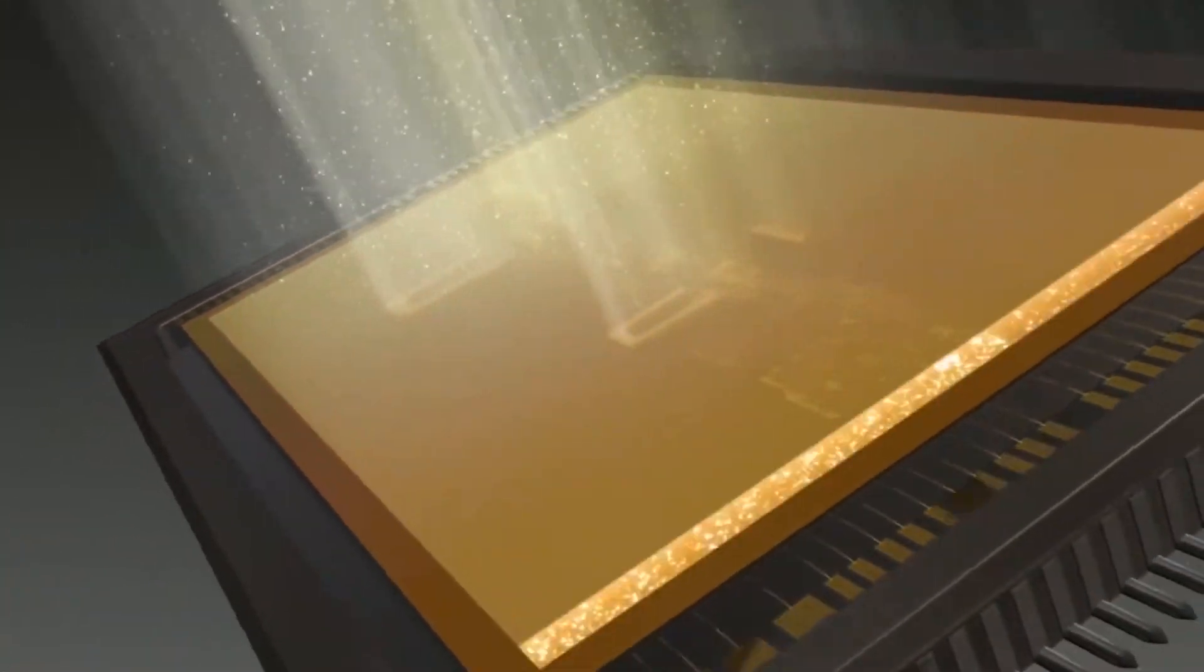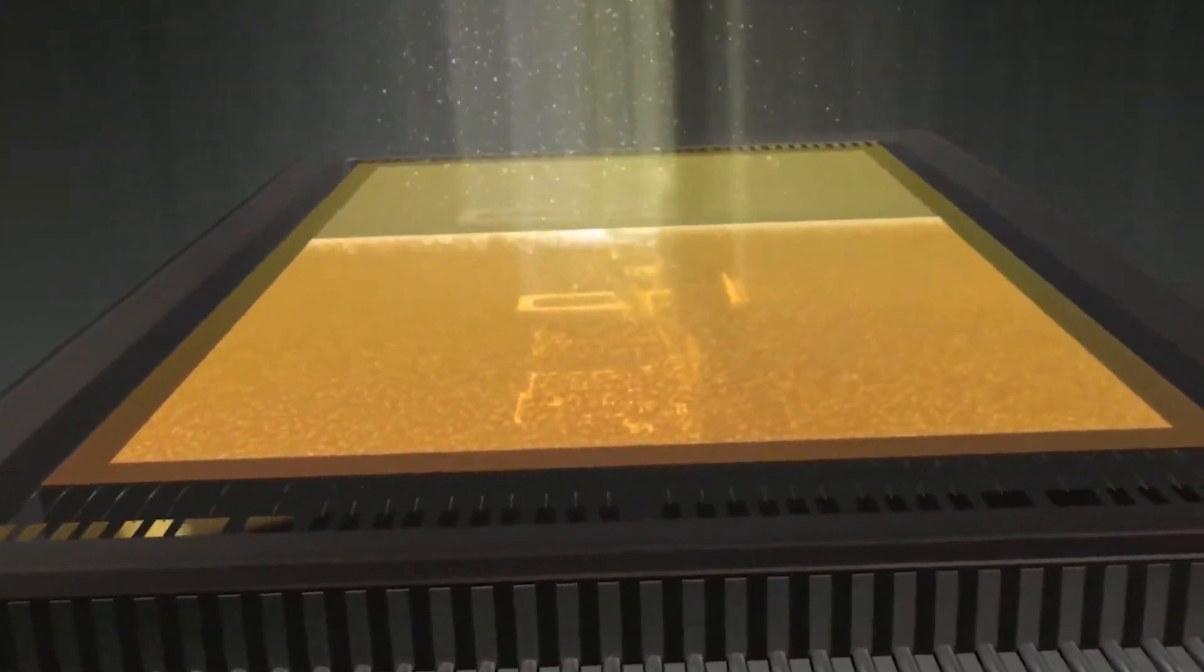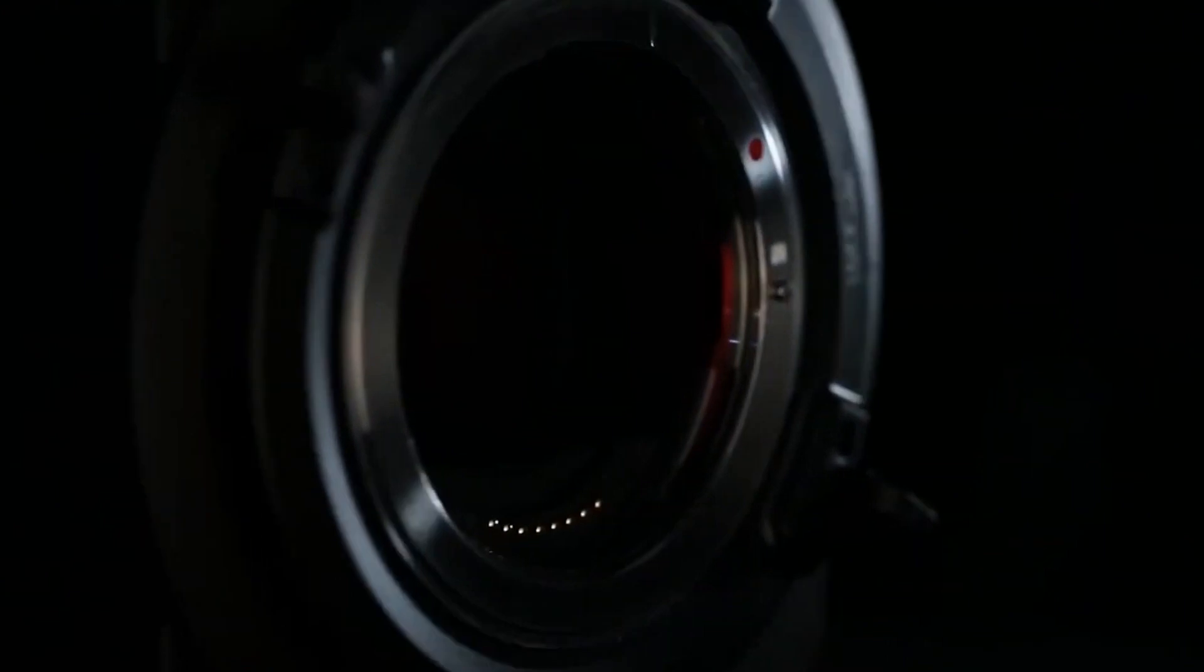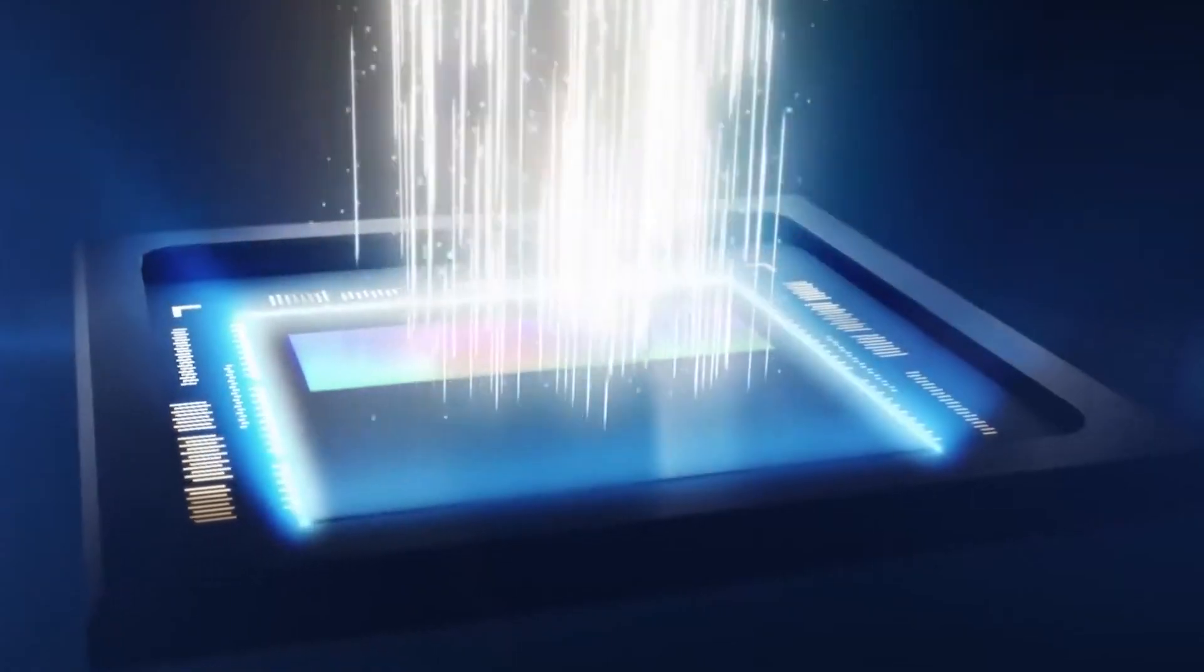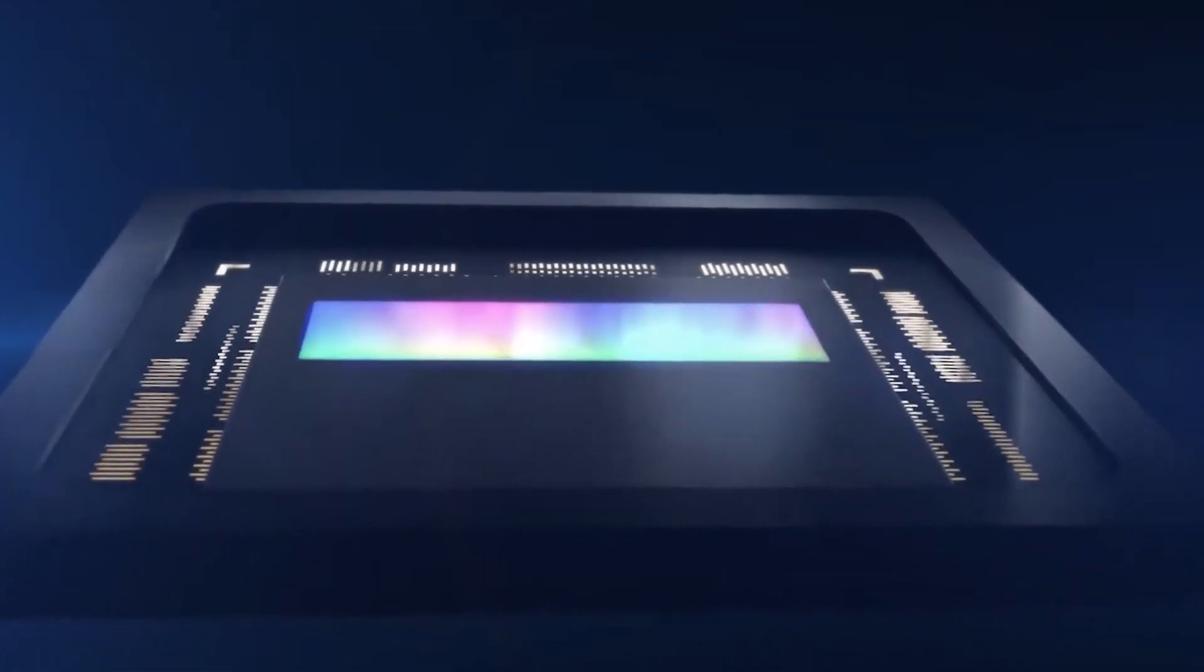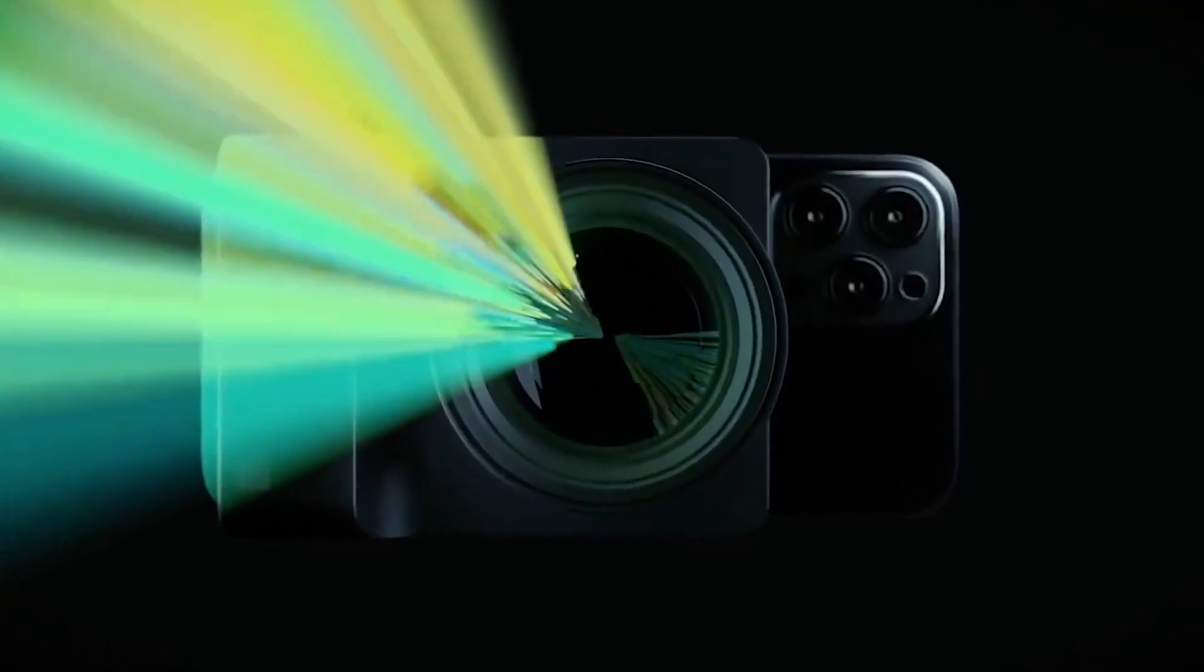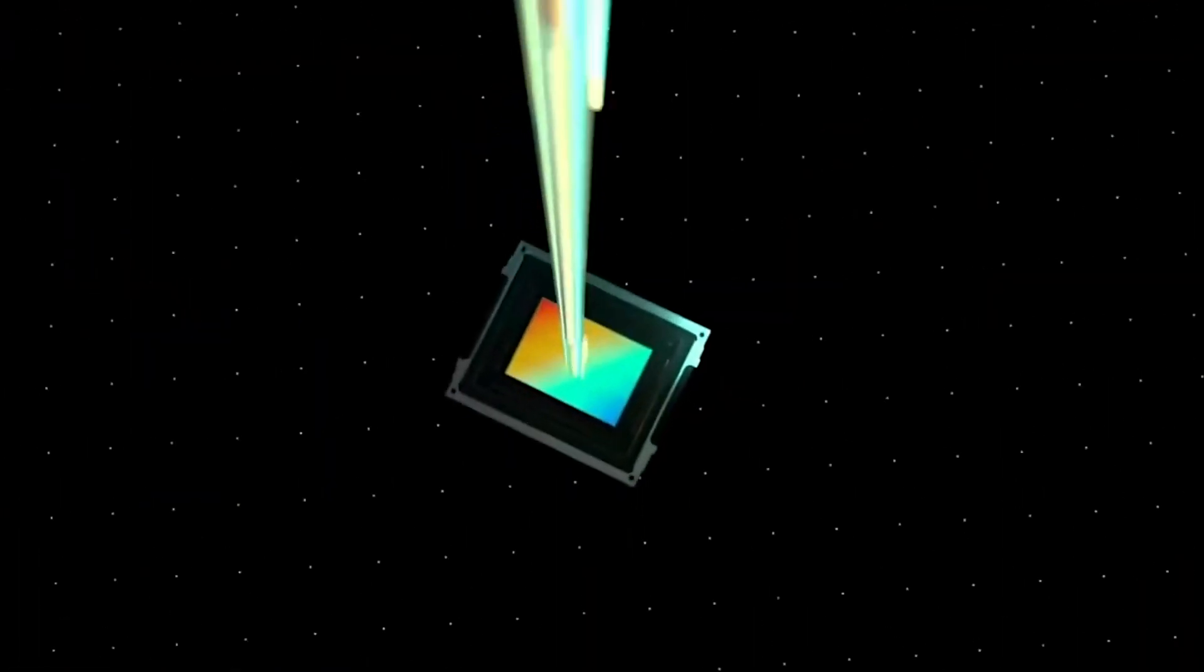The photons from the light interact with the atoms in the silicon substrate, causing electrons to get kicked into higher energy states and move through the structure. But here's the thing: these pixels can only measure the intensity of the light that hits them. They can't actually tell what color the light is. In order to capture color information, the sensor needs a color filter array CFA installed over it.